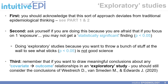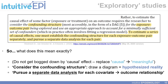Third, remember that if you want to draw meaningful conclusions about any covariate-outcome relationships in your exploratory study, you should still consider the conclusions of the Table 2 Fallacy paper and the comment by Westerreich, Van Smeden, and Edwards. Do not get bogged down by the term 'causal effect' — in your mind, just replace the word 'causal' with 'meaningful' or 'useful.' This comment on the OpenSAFELY paper indicates that we should consider the confounding structure of our exposure-outcome pairs.